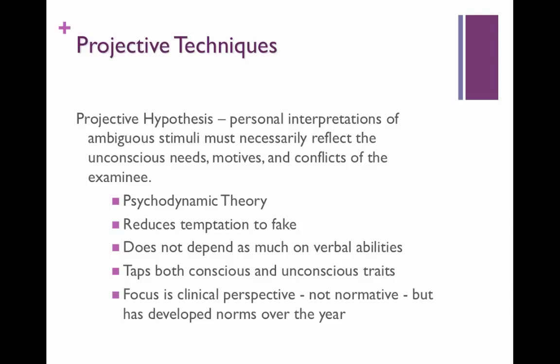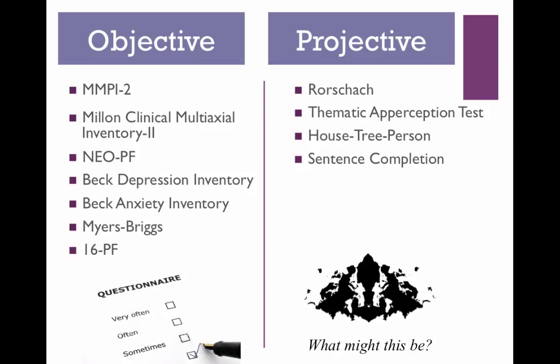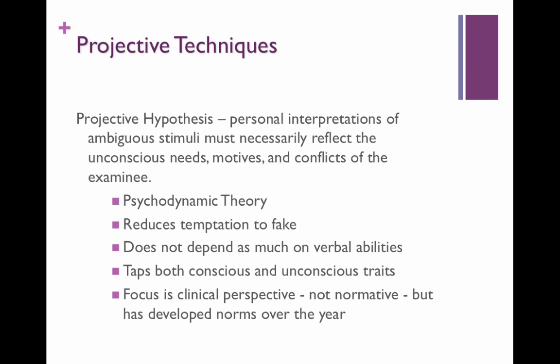Another strength is that projective tests don't depend as much on verbal abilities — you can do them whether you read or not, or if you have lower verbal functioning. So you can tap into both conscious and unconscious traits. For example, if you're looking at an inkblot and I say "what might this be?", you might see something you feel is inappropriate to mention and screen that out. So there is a certain amount of conscious reaction, because you may not want to tell me about some negative, angry, dark, or sexual kind of reaction that you have to this.